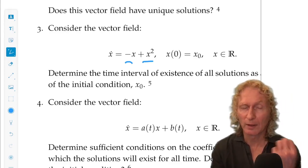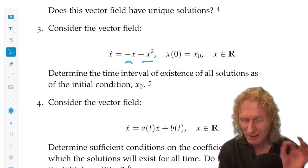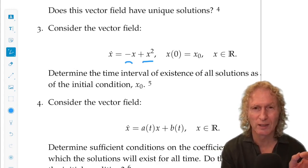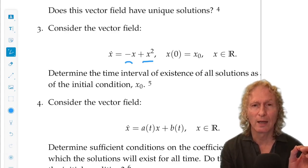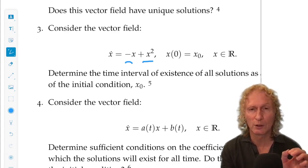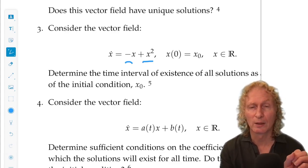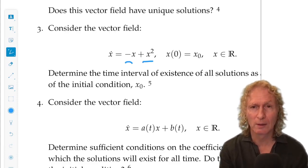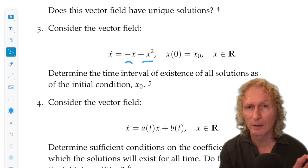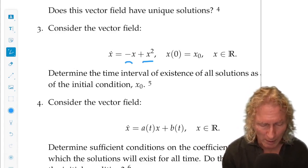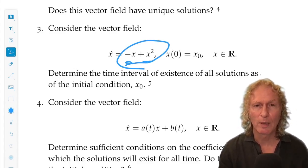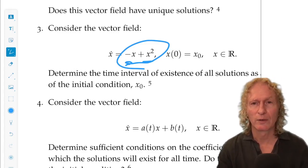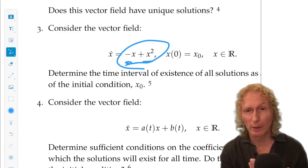So x dot equals minus x has a unique solution for each initial condition that exists for all time. x dot equal x squared has a unique solution for each initial condition that blows up in finite time depending upon the initial condition. So if you combine these two terms, tell me about the time interval existence for an arbitrary initial condition.